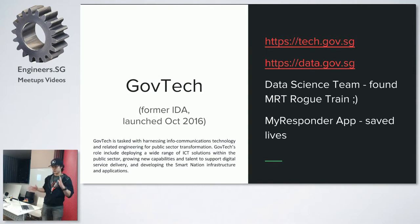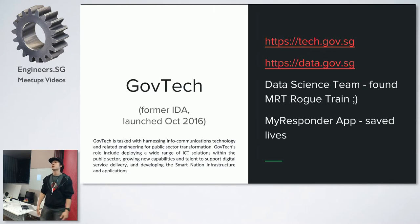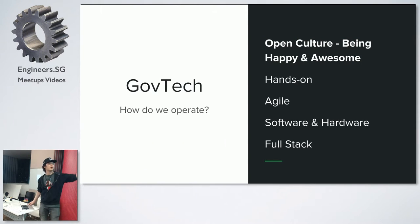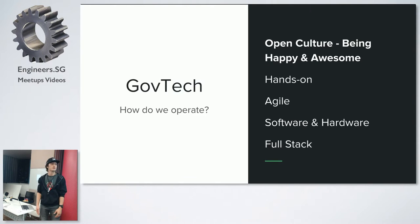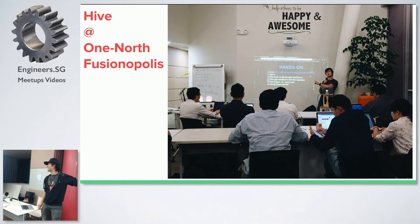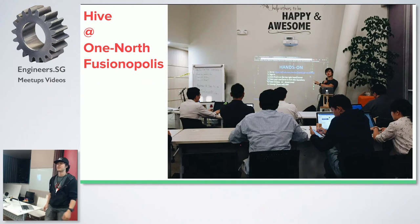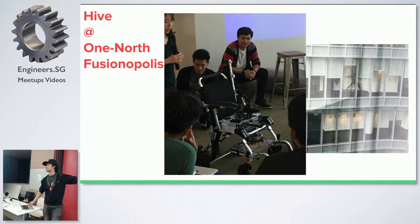Formerly known as IDA, we do a lot of things. Now it's split — GovTech is the branch that does a lot of engineering, software development, and hardware. We're hands-on and agile, so we do software development the agile way. This is my office — very open, like a software startup kind of environment.